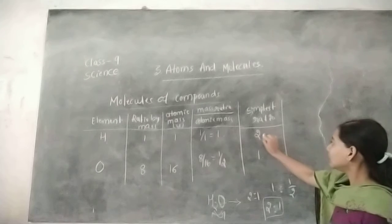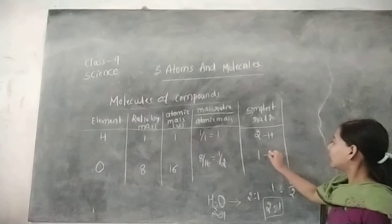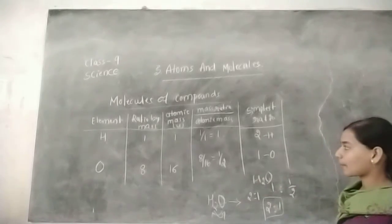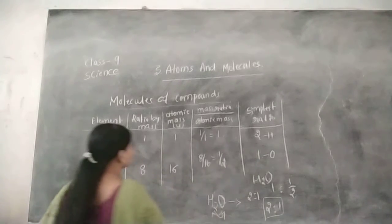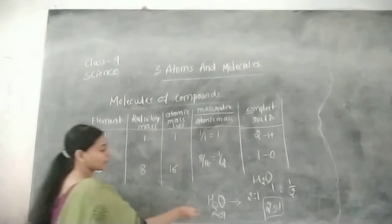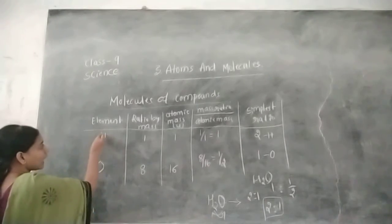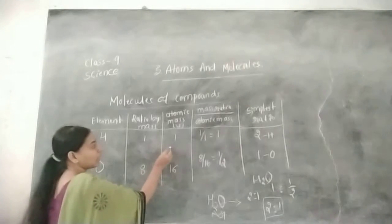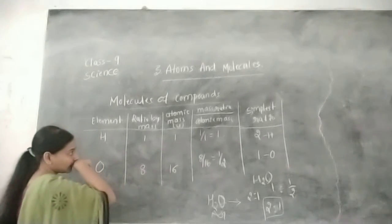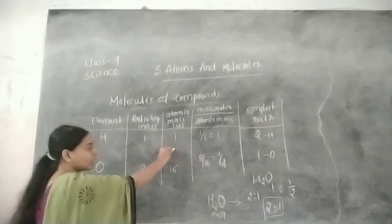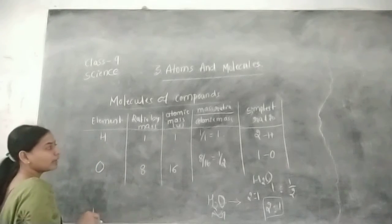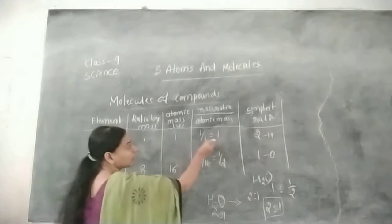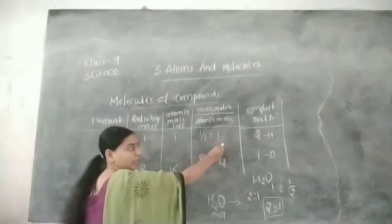Therefore, two hydrogen atoms and one oxygen atom are required for the formation of H2O. The ratio is 2 is to 1. The ratio by mass for hydrogen is 1 and the atomic mass is also 1, compared to the carbon-12 isotope. When we divide these two terms, we get the ratio.